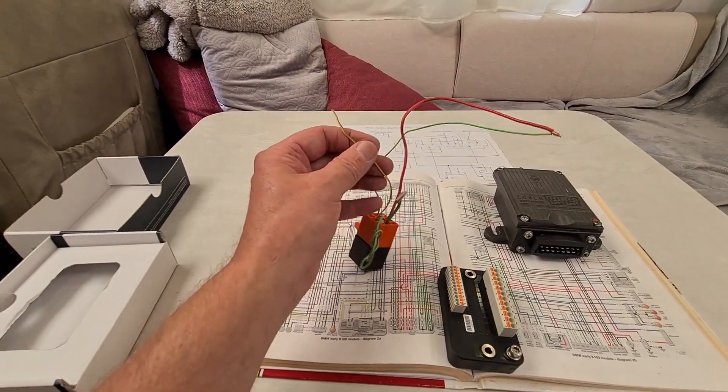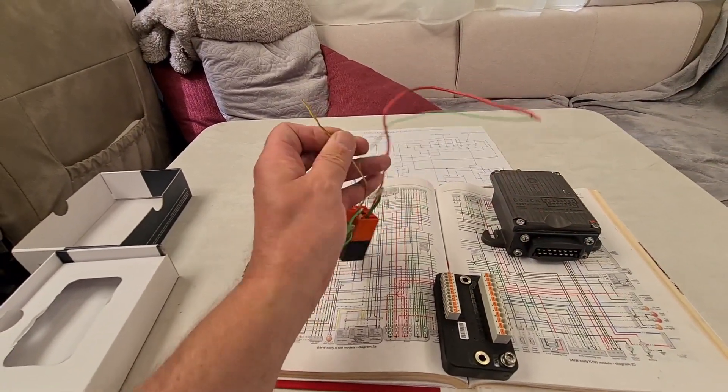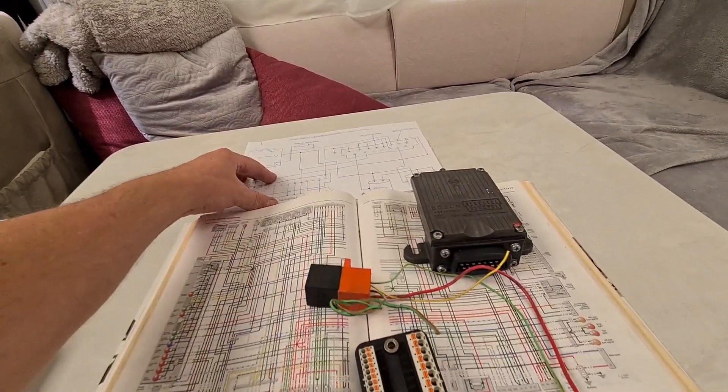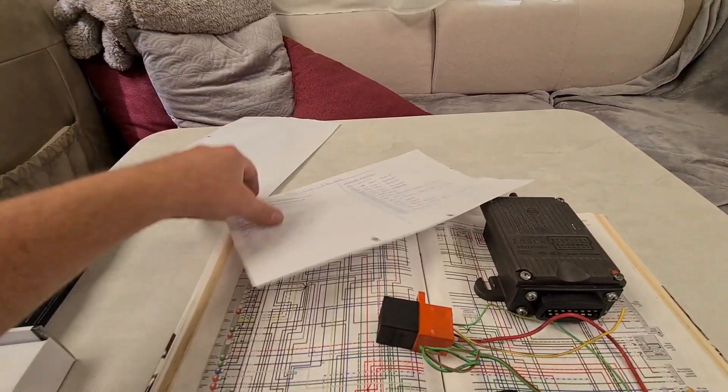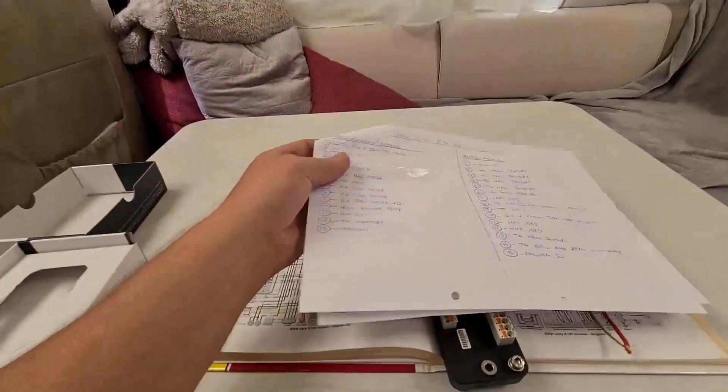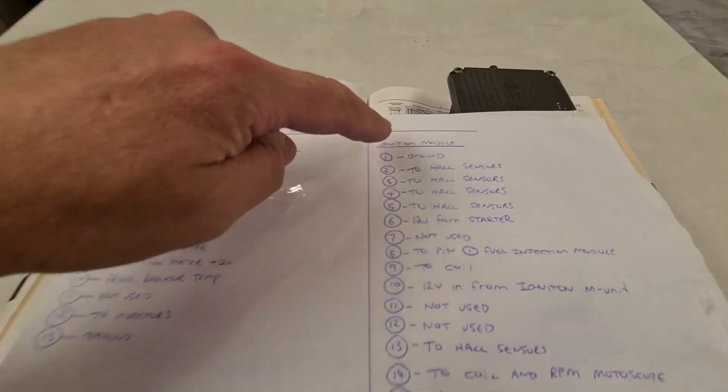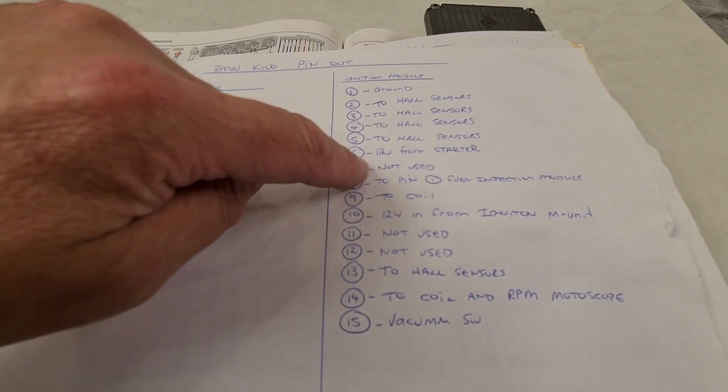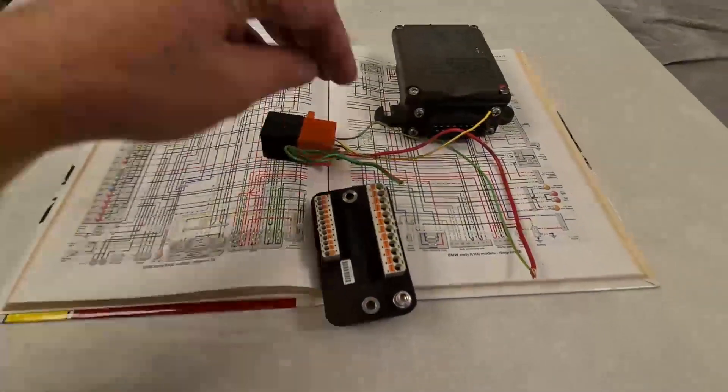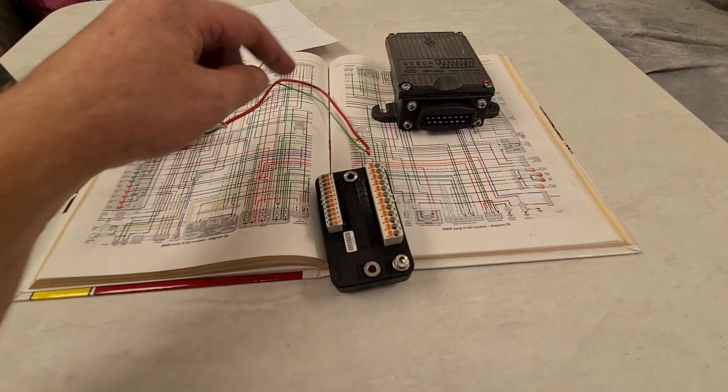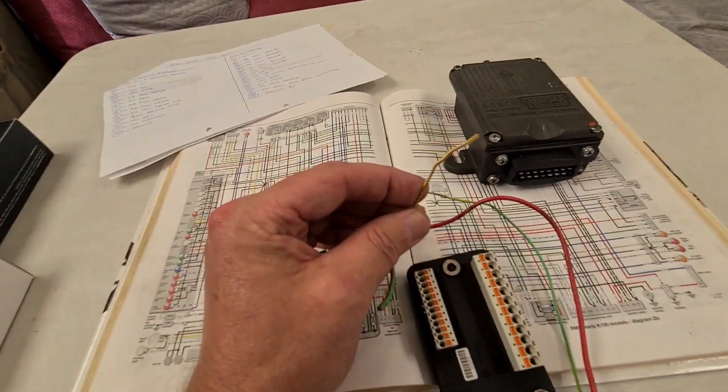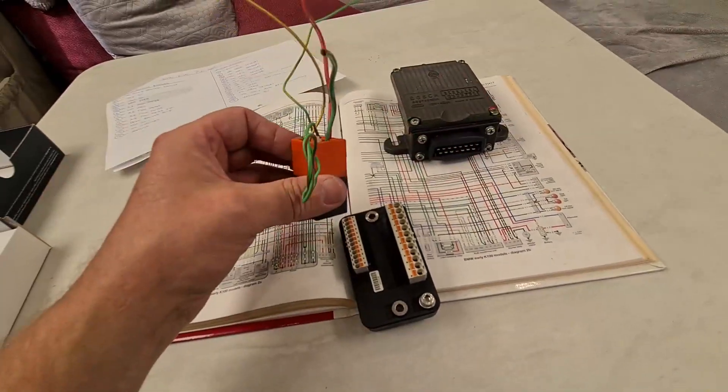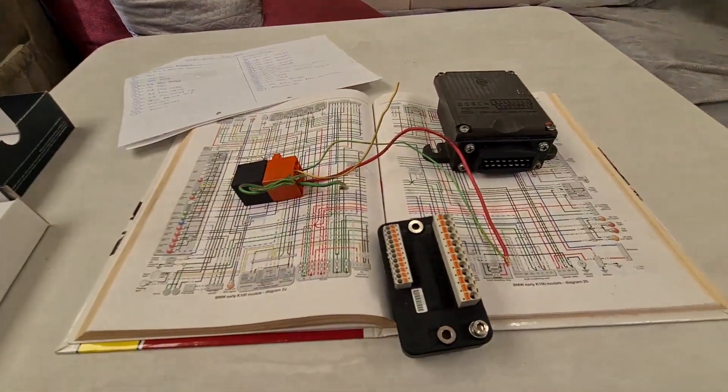The next one we're going to worry about is this yellow with a brown trace. This one will join into our ignition on pin seven. So we get our ignition module, pin seven is not used—well, it is going to be used now. That's going to be for our fuel pump. You're going to have to find the plug that comes on here, find this matching yellow with a brown trace, and join it onto there. That's how you do that.